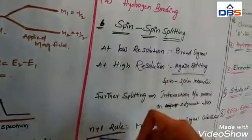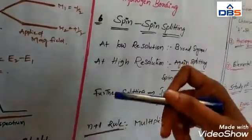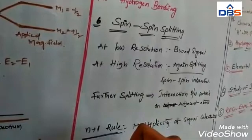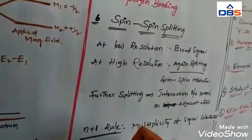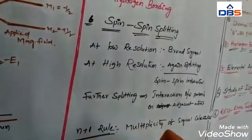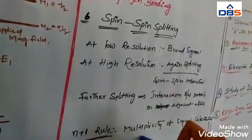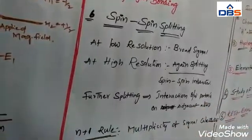Suppose the organic compound has 2 hydrogens, it forms 3 peaks. That is the triplet.